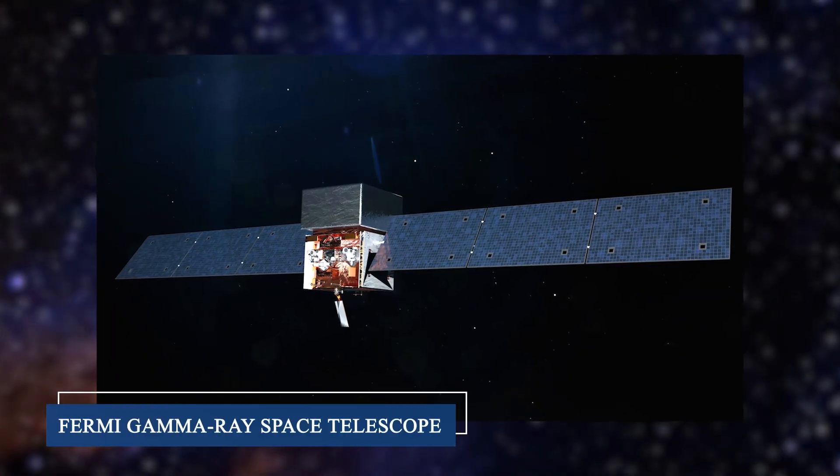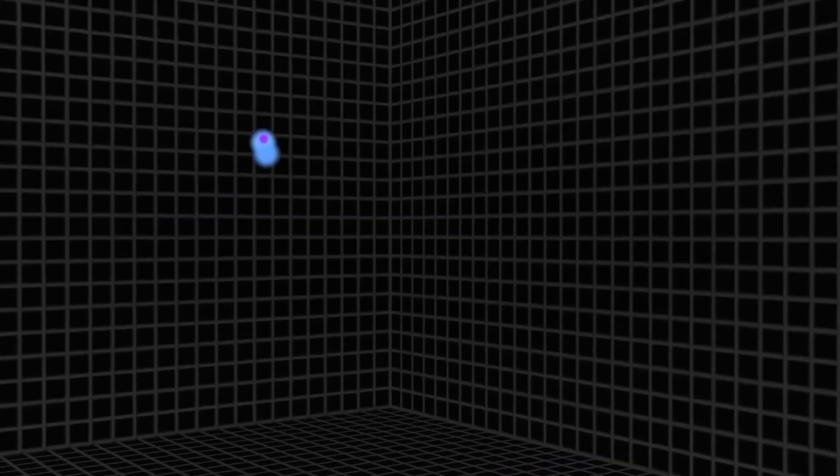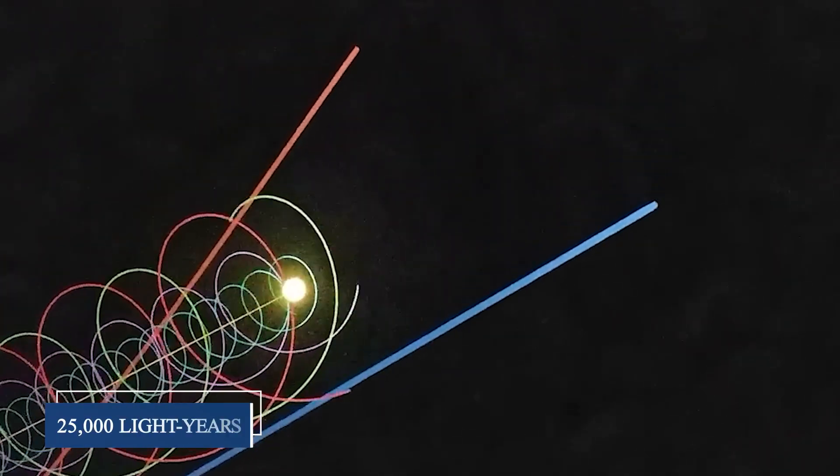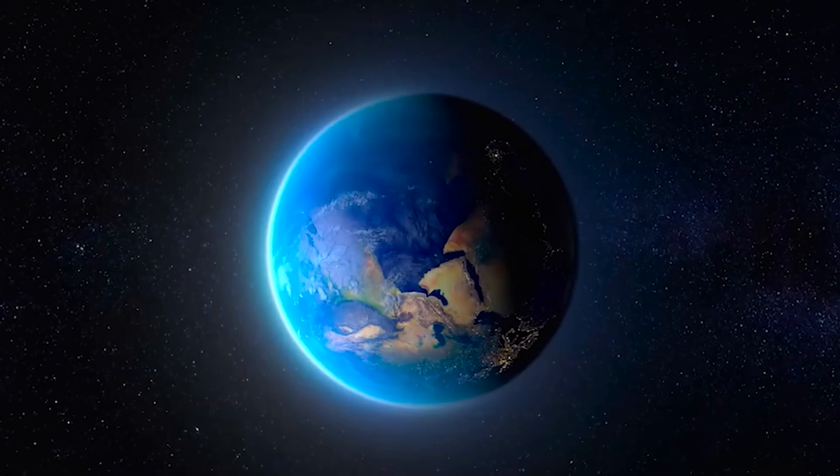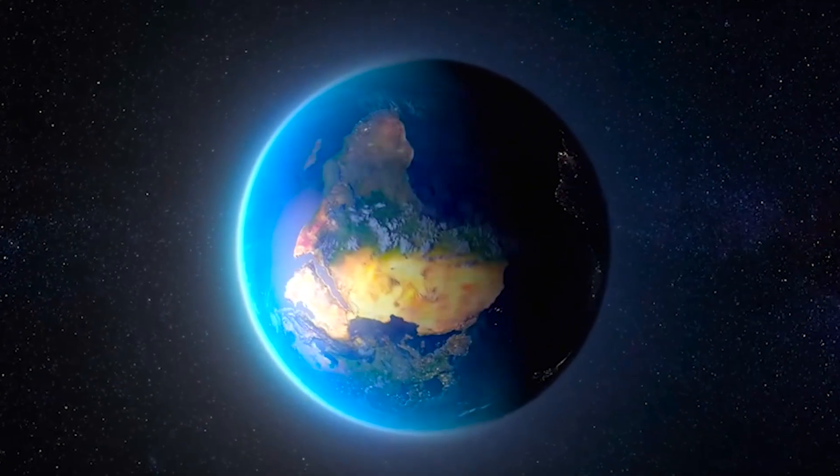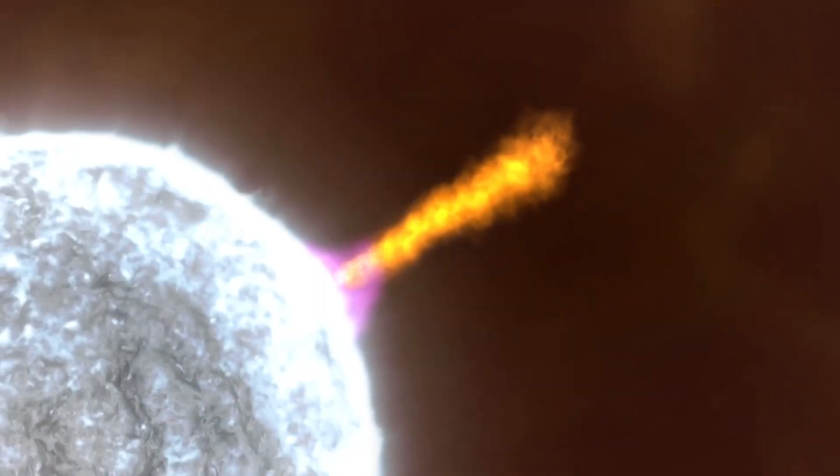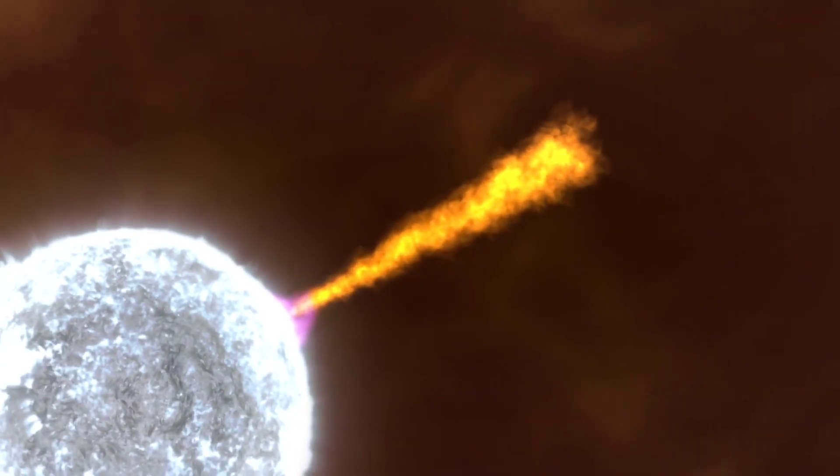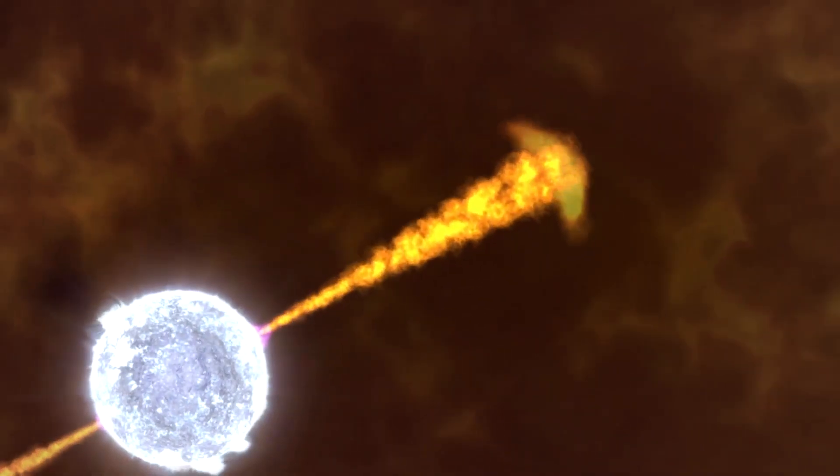The Fermi Gamma Ray Space Telescope discovered two massive structures called the Fermi bubbles, gigantic lobes of high-energy radiation that stretch 25,000 light-years above and below our galaxy's center. To put that in perspective, that's about the same distance from Earth to the center of our galaxy. These bubbles are filled with particles moving at nearly the speed of light, and they're so energetic they outshine everything else in gamma rays.